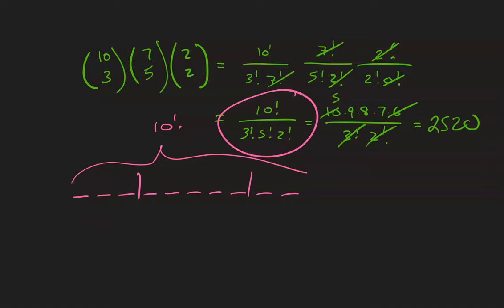Because we don't care about the arrangement within each project, we've overcounted the first project by a factor of 3!, the second by 5!, and the third by 2!. This pictorial way of thinking yields the same answer.